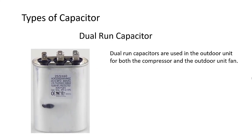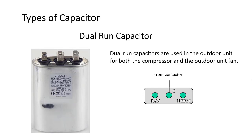Oftentimes in outdoor units with PSC motors, you will have a dual run capacitor. It is for both the compressor and the outdoor fan motor. They are wired up in a pretty straightforward fashion. HERM stands for compressor and fan for the fan motor. Don't get them confused as they require different farad settings.